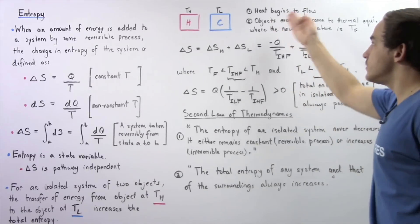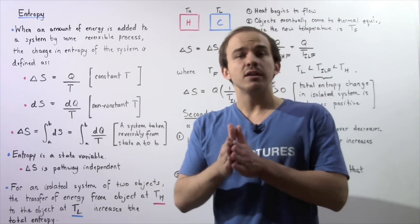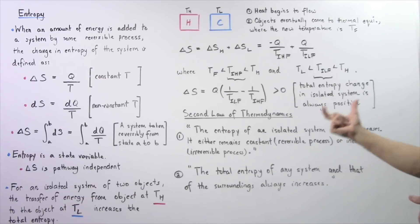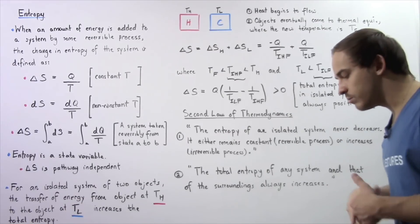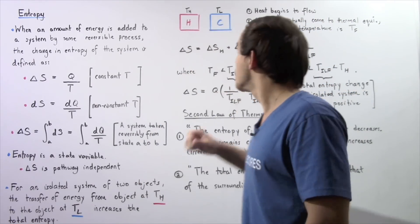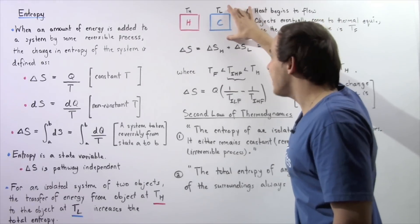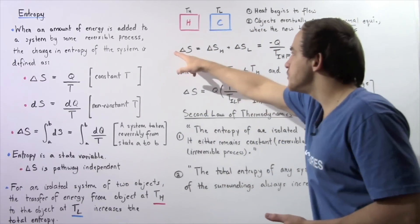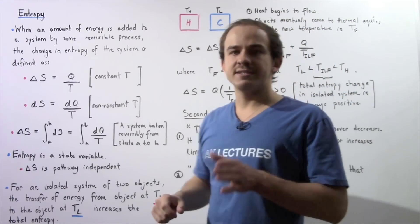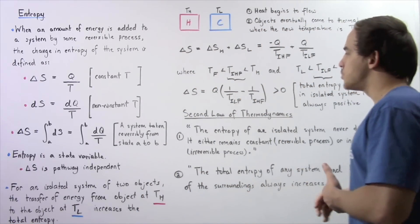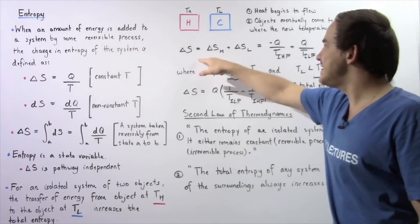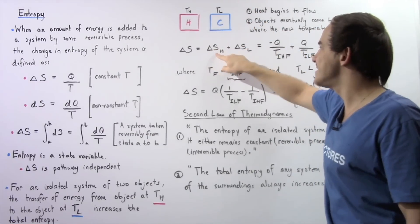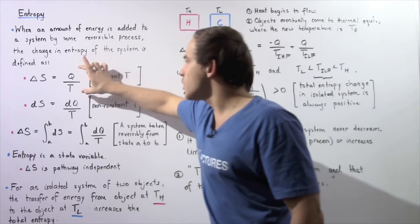Initially, energy begins to flow as a result of heat, due to the difference in temperature. We connect the two objects and heat transfer begins to take place. The objects eventually come to thermal equilibrium, meaning the temperatures will eventually equalize. This object will gain a certain amount of energy and this object will lose that same amount of energy. So let's represent the change in entropy of our isolated system: it is equal to the change in entropy of the hot object plus the change in entropy of the cool object — delta SH plus delta SL.